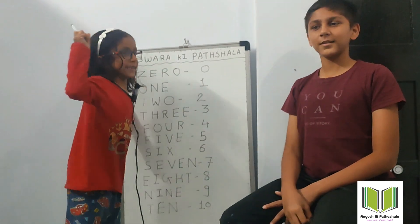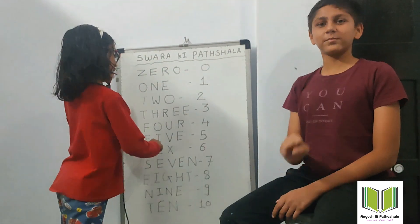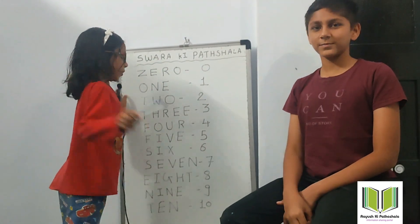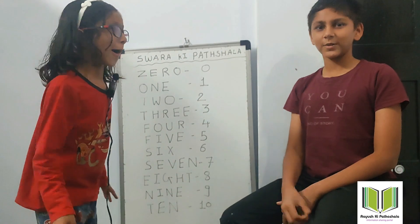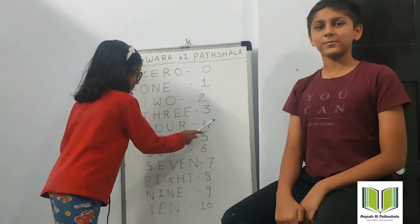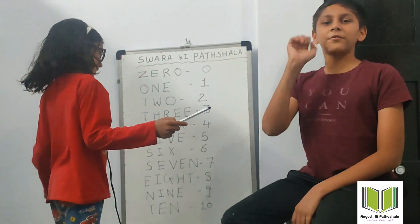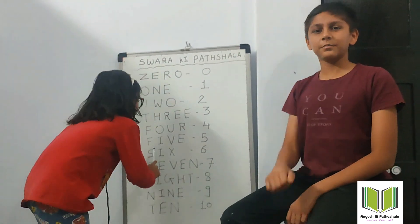Three — T, H, R, O, N, E — 3. Four — F, O, U, R — 4. Five — F, I, V, E — 5.